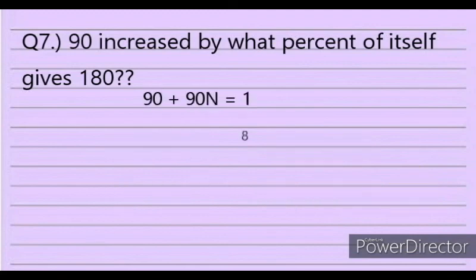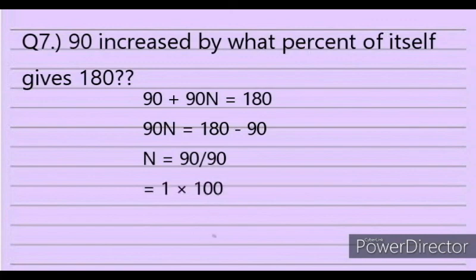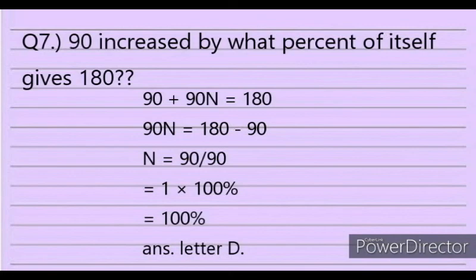Solution: 90 plus 90N equals 180. So 90N equals 180 minus 90. N equals 90 over 90, which equals 1 times 100%, giving 100%. The answer is letter D.